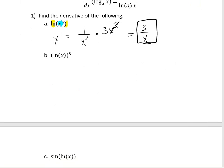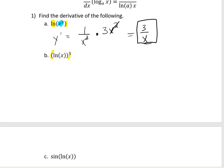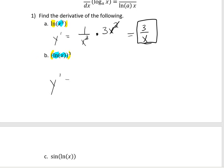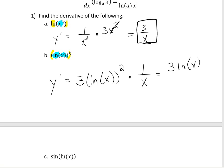On the next one, our outside function is that we're actually cubing the natural log, and our inside function is the natural log. The derivative for this one would be: the derivative of something cubed is 3, leave the inside alone, squared, times the derivative of that inside piece. Rewriting that a little bit better, that would be 3 times the natural log of x, that whole thing squared, divided by x.